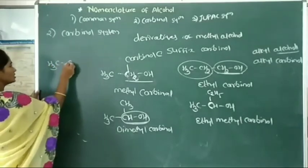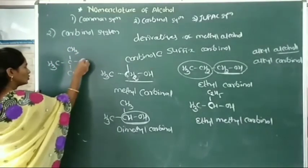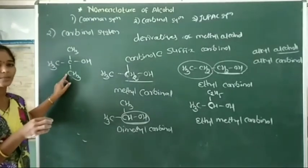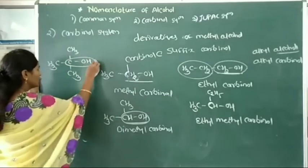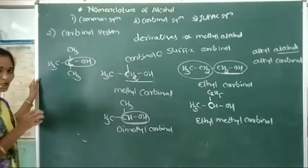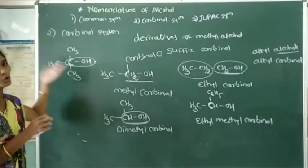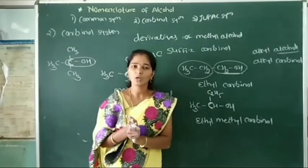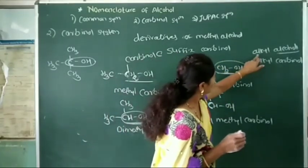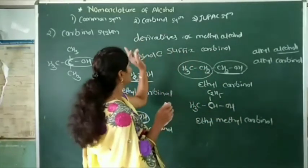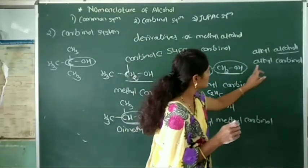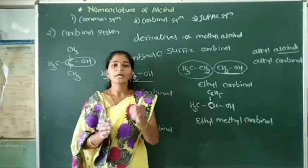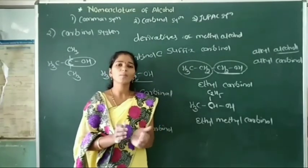For another example: CH3 with C attached to three methyl groups (CH3OH). In this example, the carbynol carbon is attached to three different methyl groups. What is the name of this carbynol system? Write it in your notebook — this is for you to practice. To summarize: today's lecture covered the carbynol system of alcohol. In the common system the name is ethyl alcohol; in the carbynol system the name is ethyl carbynol. We will try more examples and write their common name and carbynol system names.